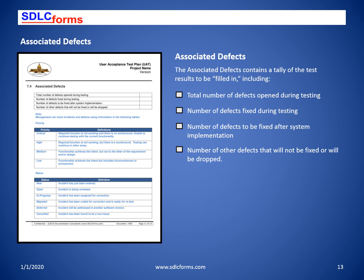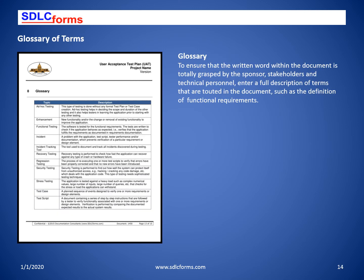Use the priority and status tables to identify the criticality of each defect. The priorities range from critical, to high, to medium, to low, in order that management can make a decision as to the path to follow to either correct the anomaly, use a workaround solution, or use the function recognizing that it satisfies the intent but contains inconveniences or annoyances. The glossary has already been started with critical terms in this fill-in template.